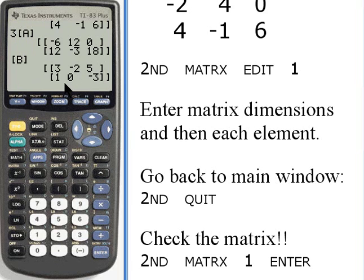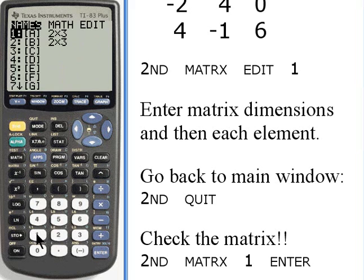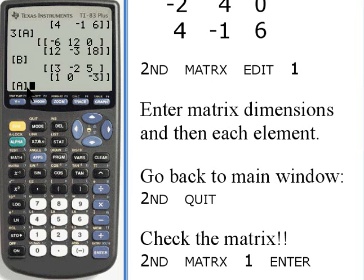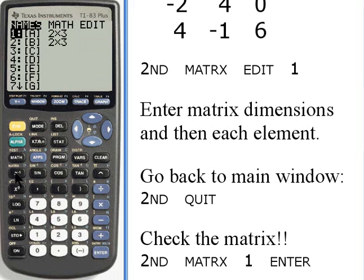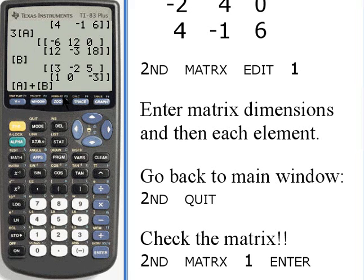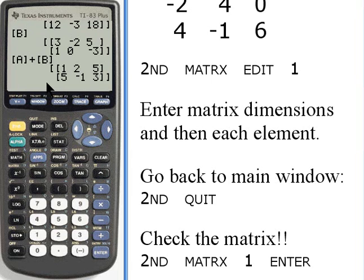If I want to add matrix A and matrix B together, I just press 2nd and matrix, stay in the names column and press 1. Now A appears on my screen. I'm adding, so I'll press the plus button. Then I'll go back and press 2nd and matrix and 2, so that I get matrix B on the screen. And when I press the enter button, it's given me the sum of those two matrices.